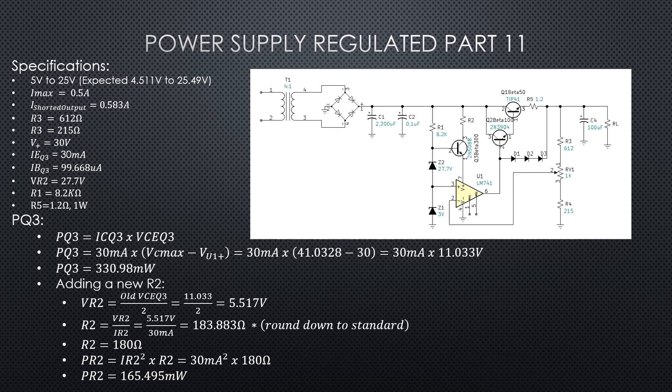So now that we know the voltage that we want to peel off and put on R2, we can divide that by IR2. Voltage divided by current gives me my resistance, and we're going to use that same max current for the op amp, the 30 milliamps, and that's going to give us a resistor of 183.883 ohms, and we're going to round that down to the next standard value. We rounded that down to R2, and that gives us a 180 ohm resistor for our standard value. Now we can find the power for that R2, and it's I squared times R: 30 milliamps squared times 180, and we get a power PR2 of 165.495 milliwatts.